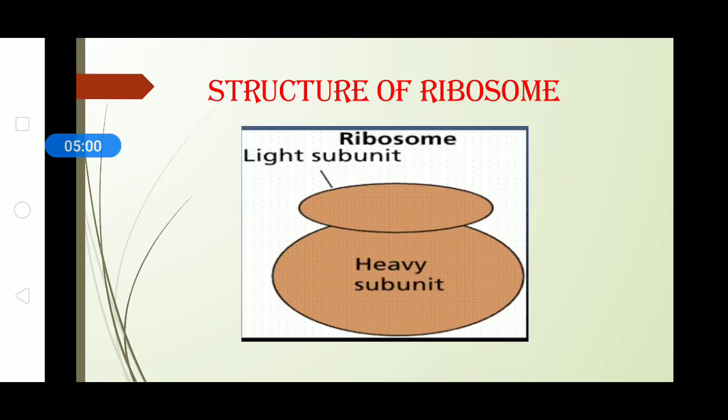As you can see in this diagram, structure of ribosome, it is shown by a light subunit and the heavy subunit. They are designated by the or nominated by their Svedberg unit, which is also termed as their sedimentation coefficient.